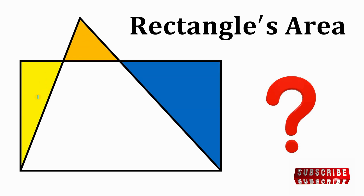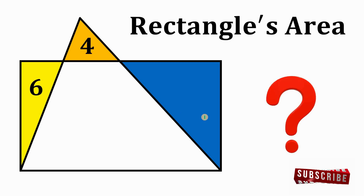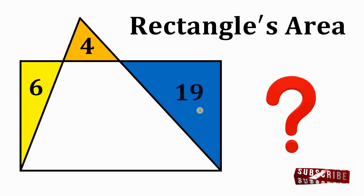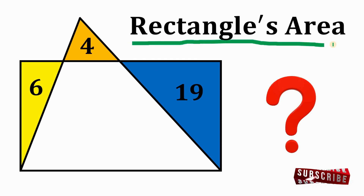The area of this yellow triangle is given as six square units, the area of this orange triangle is four square units, and the area of this blue-red triangle is equivalent to 19 square units. Now the question is: what is the rectangle's area?